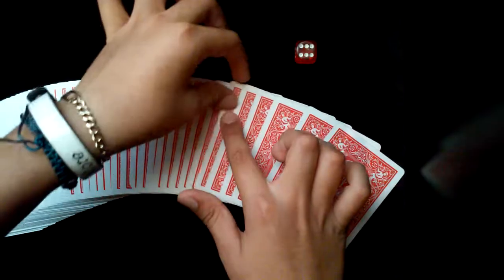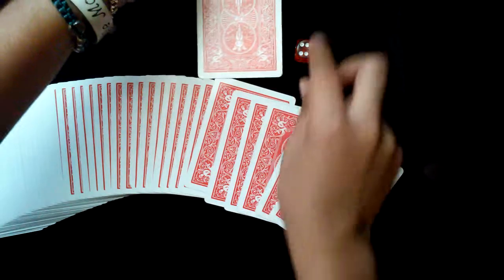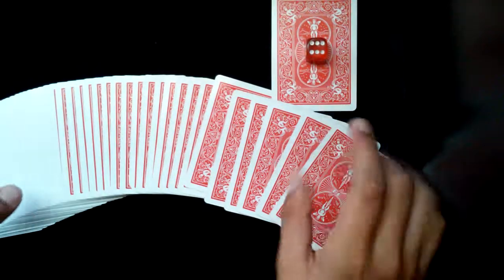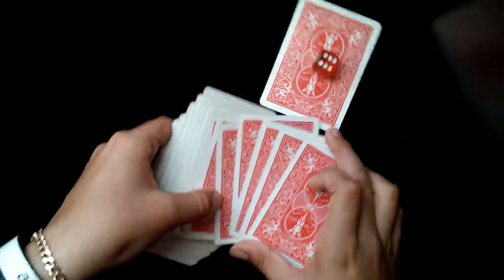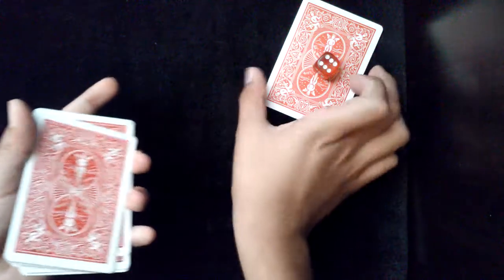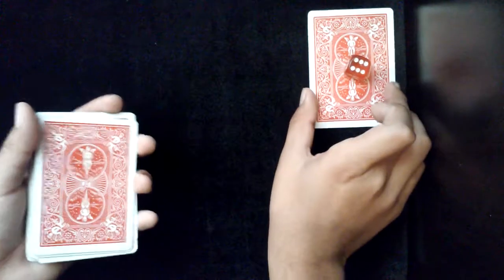So we're gonna come from the top: one, two, three, four, five, six. Right there, the sixth card. Sixth card. I'm gonna put the dice on top. That's the sixth card. Make sure that it stays there the whole time and no switches or that I don't switch the card, anything like that.